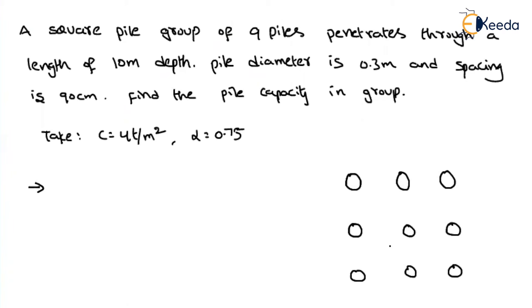column you will get 3 piles total. What is the spacing between them? Center to center spacing between them is given as 90 centimeter. So first of all, find out what is the total width of this square, b.